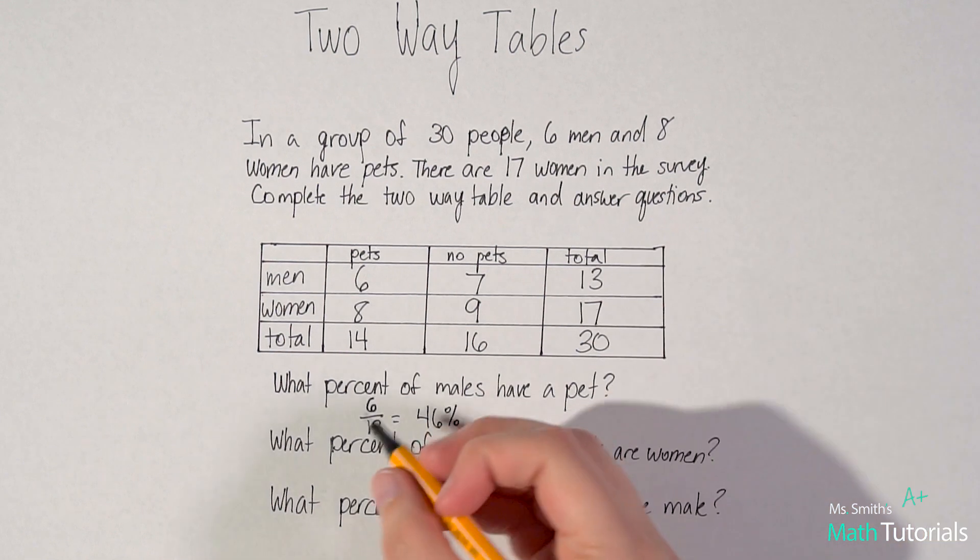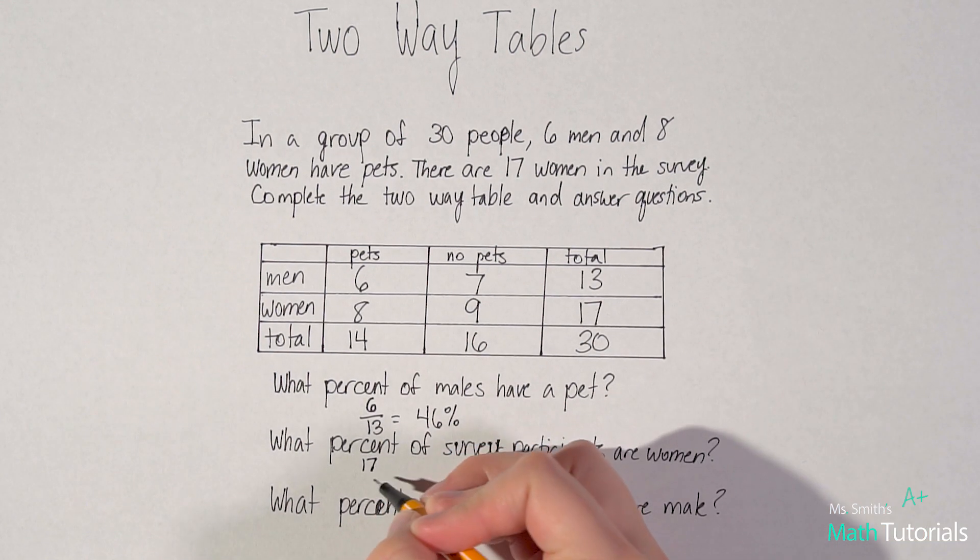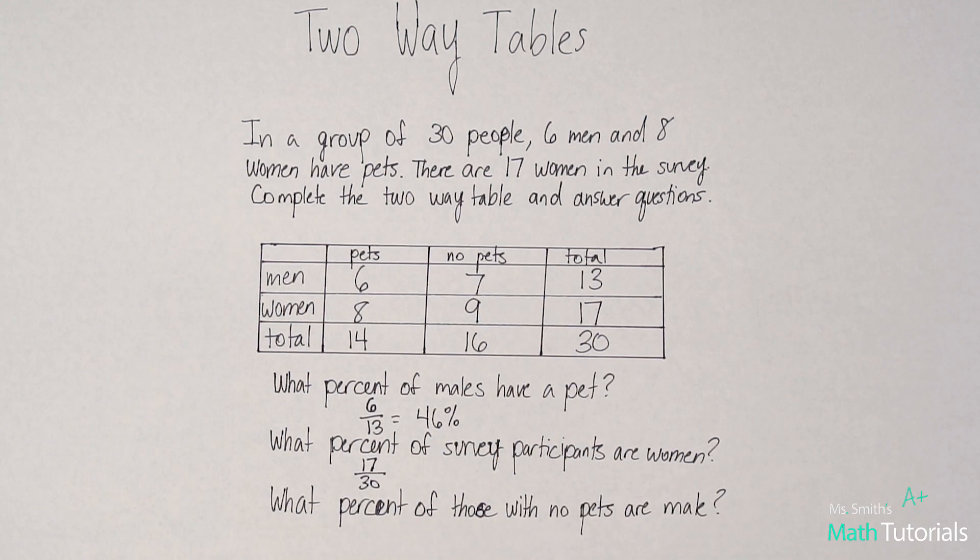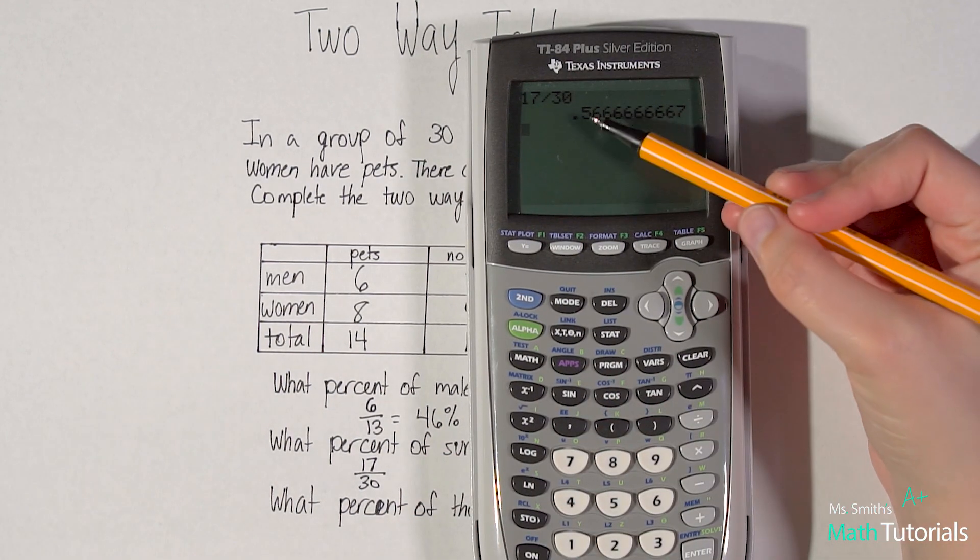So we know that 17 of the people are women out of 30 total. So 17 divided by 30 would give me a long decimal.